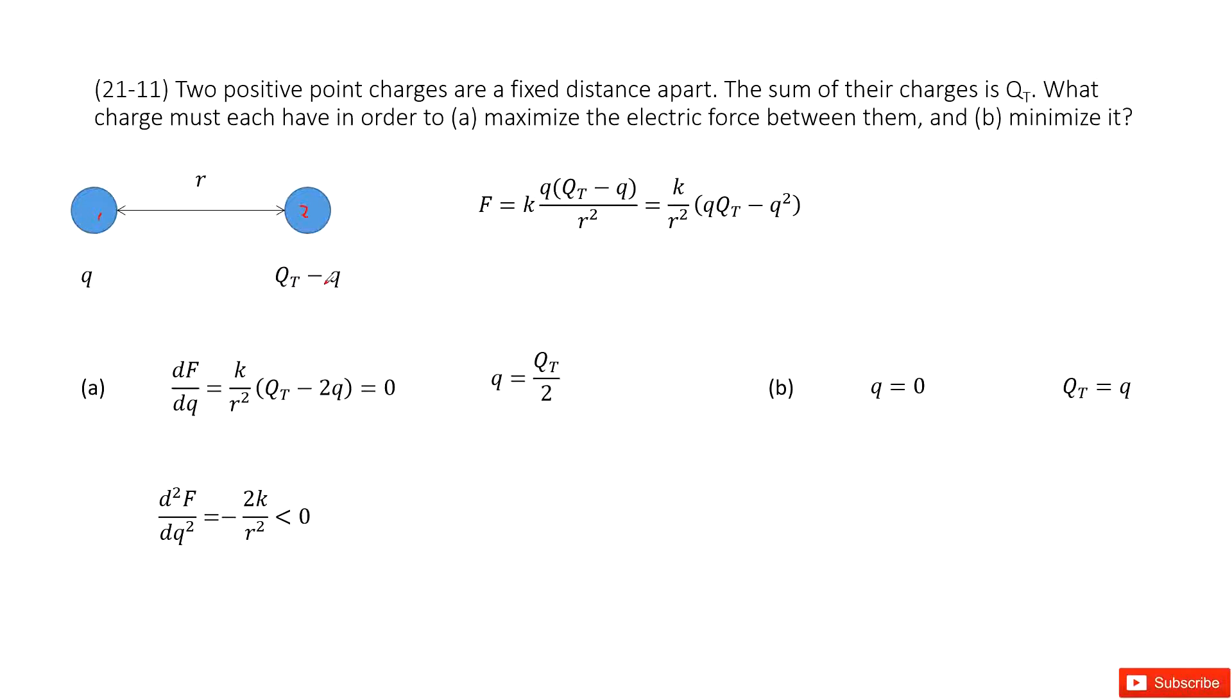Therefore, we can write the electric force by using Coulomb's law. F equal to k Q times Qt minus Q, divided by R squared. And then you can write it in this way.